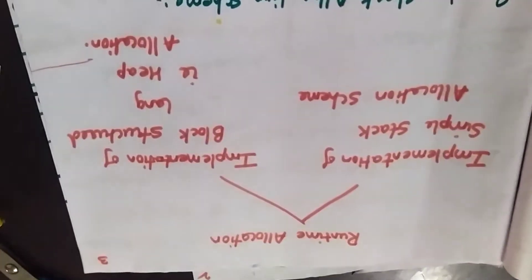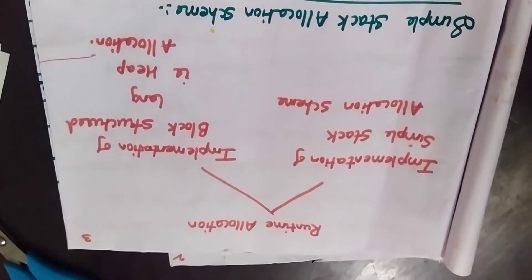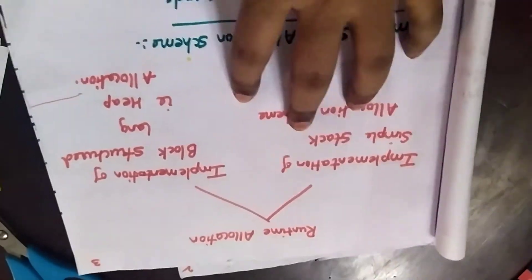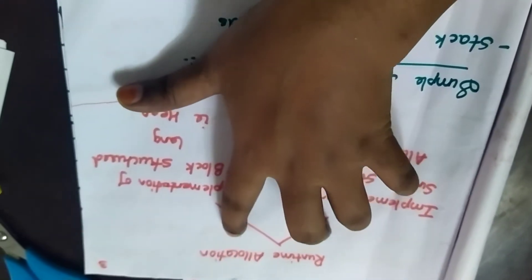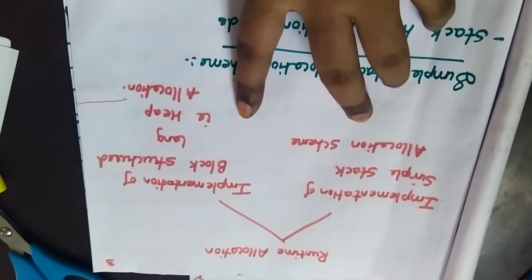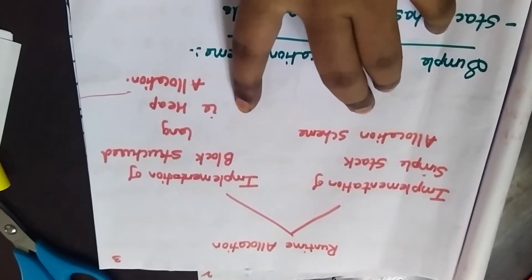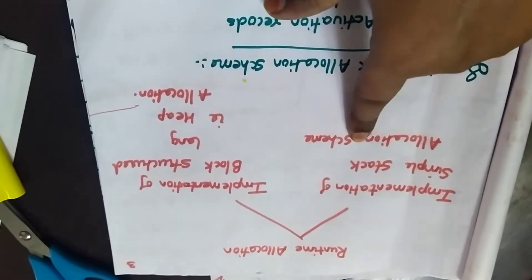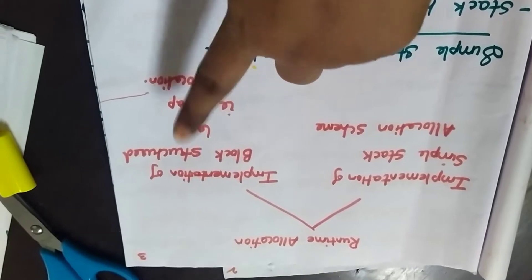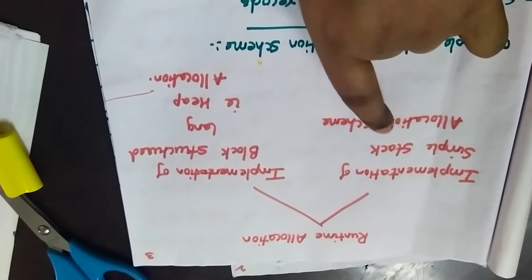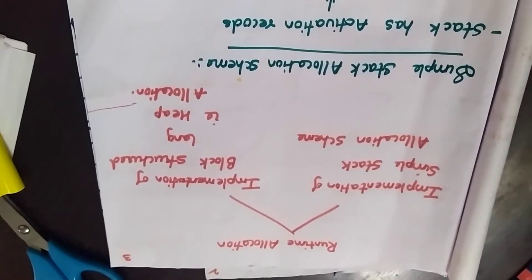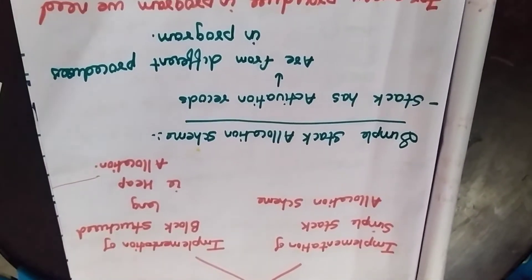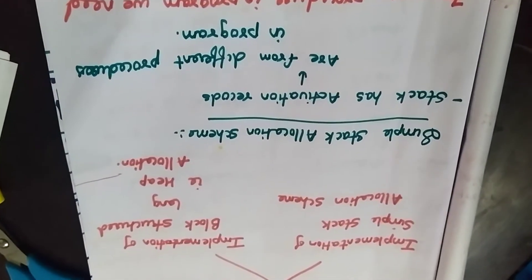Runtime allocation is divided into two parts. One is the implementation of the stack — the simple allocation scheme — and the other is the implementation of block structured language, which is heap allocation. In this class, we will learn about the simple stack allocation scheme.